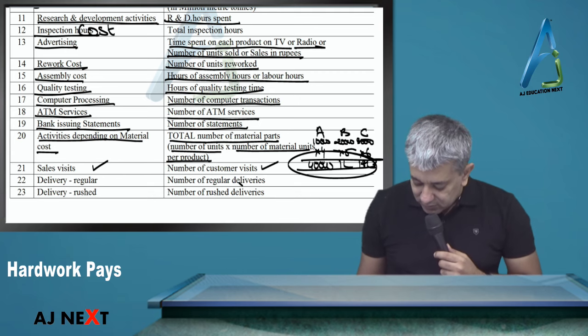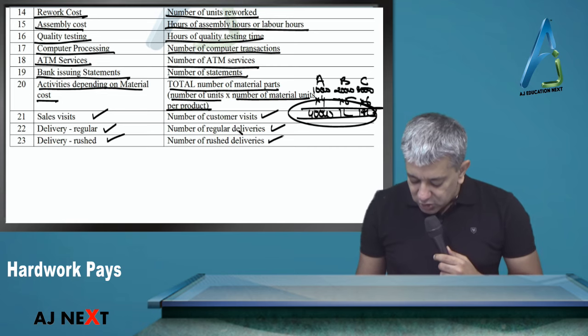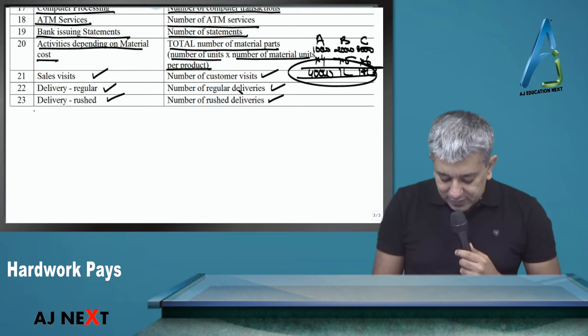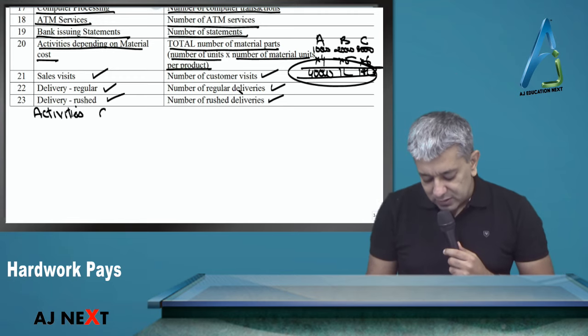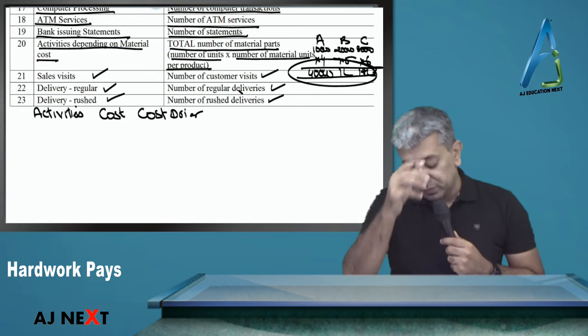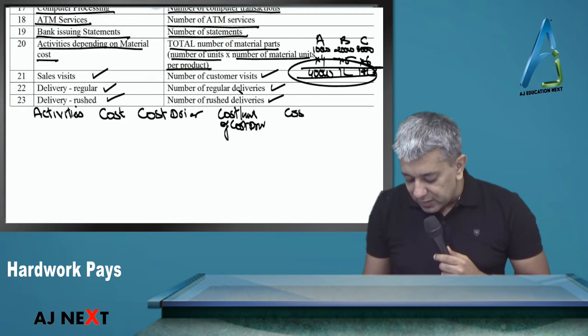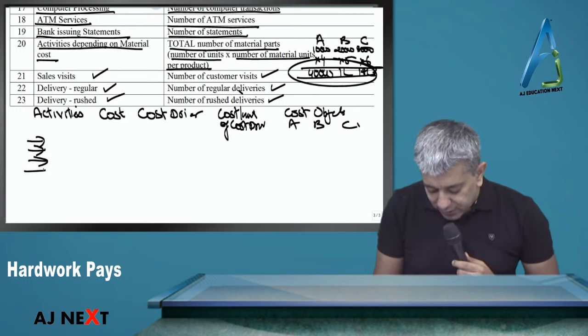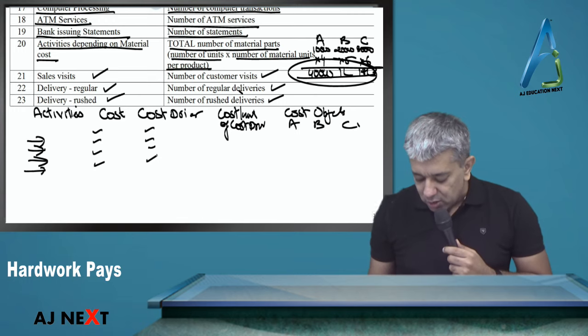Sales visits - number of customer visits. Deliveries which are regular - this can be useful for courier companies - number of regular deliveries. Then rush deliveries - number of rush deliveries. Remember, these are all cost drivers. Remember how we make our statement. For all activities happening in the organization, find out the cost. For cost drivers refer to this table, whatever I've told here.